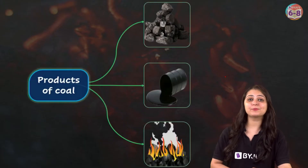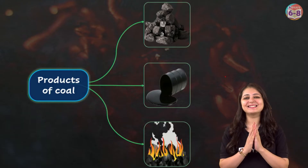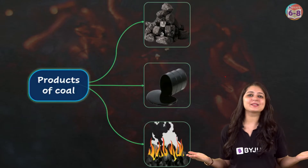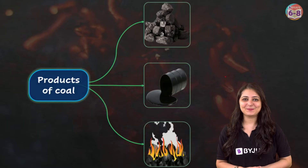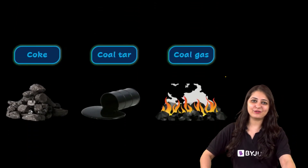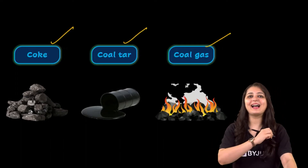Coal is actually a hard rock that is typically black or brown in colour. It's a valuable resource used to generate heat, power and energy. There are various products that we get from coal, and today's concept bite is all about that. The three main products that we get from coal are coke, coal tar and coal gas.